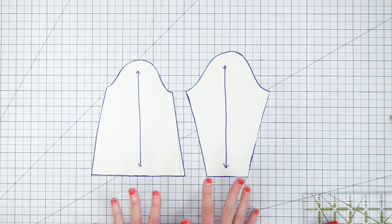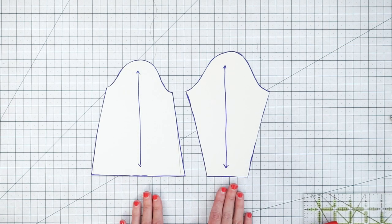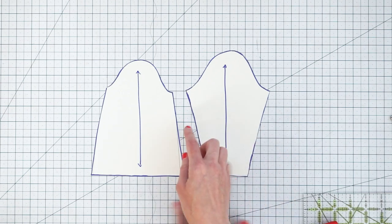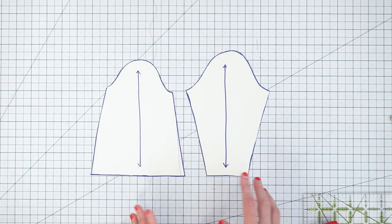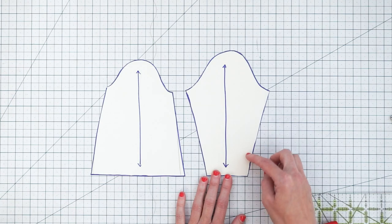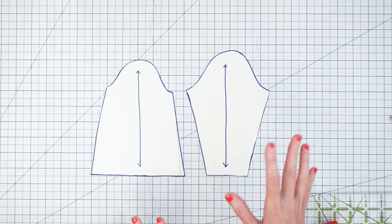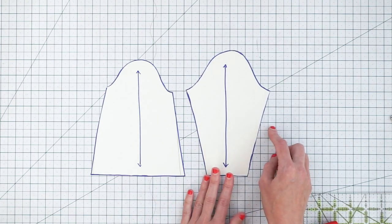So the best place to lengthen or shorten your sleeve is going to be right in the middle. And if you are lengthening or shortening a lot you could do it in two places, but for these purposes we'll just do it in one place today.